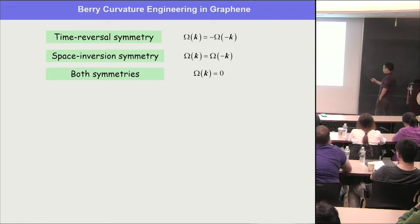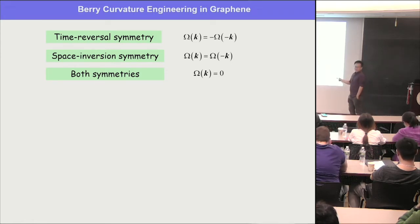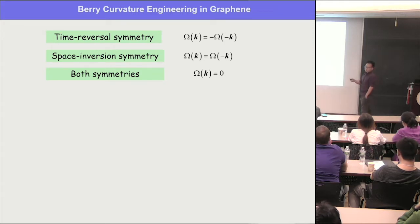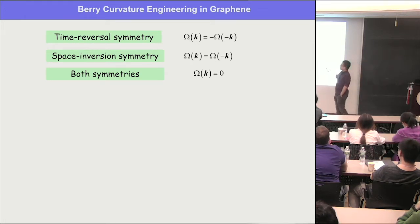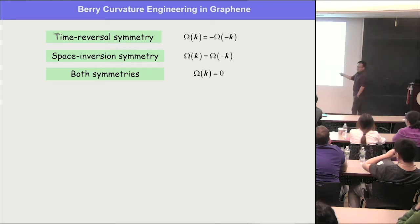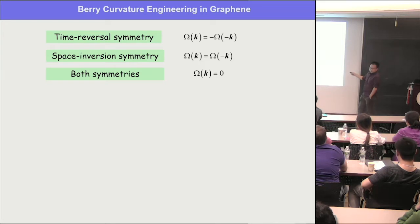In a system with time-reversal symmetry, the Berry curvature acts like a magnetic moment, so under time reversal, k becomes minus k and omega becomes minus omega. If you also have space inversion symmetry, then k and minus k are related by spatial inversion, and omega must be the same. This means that if you have both symmetries like in graphene, the Berry curvature is everywhere zero.